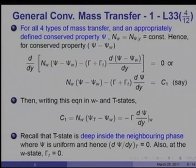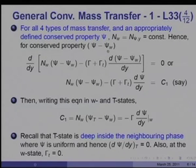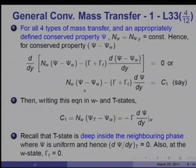For all four types of mass transfer, I will not re-derive as done for Stefan flow. In each case, we simply convert the applicable mass transfer and energy transfer equation to a conserved property equation with appropriately defined conserved property psi. For all types of mass transfer, with an appropriately defined conserved property psi, n_w equals n·psi·y equals constant. Taking (psi minus psi_w) as the conserved property gives: n_w·(psi minus psi_w) minus (gamma plus gamma_t)·d(psi minus psi_w)/dy equals zero, or n_w·(psi minus psi_w) minus (gamma plus gamma_t)·d·psi/dy equals C1.